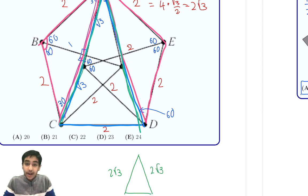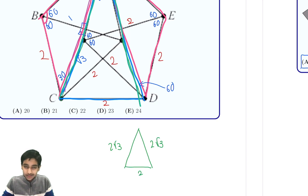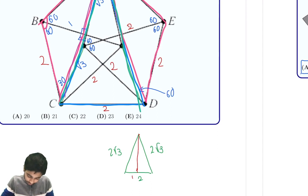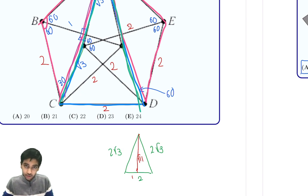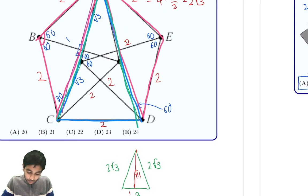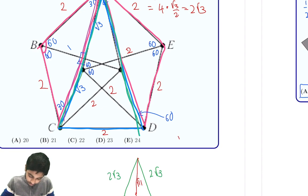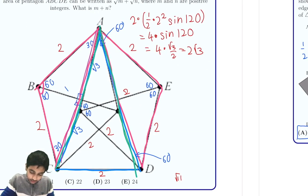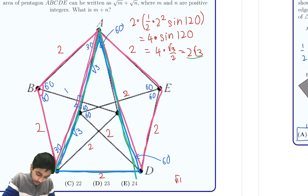Rather than using Heron's formula, which would give ugly expressions, we drop the altitude from the apex to the base. This splits the base in half, giving us 1 on each side. By the Pythagorean theorem, the height equals √((2√3)² − 1²) = √(12 − 1) = √11. So the height is √11, and the base is 2. Area of triangle ACD = ½ × 2 × √11 = √11.